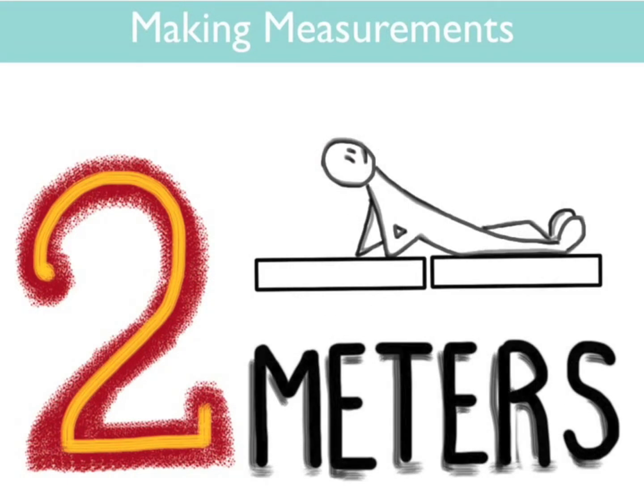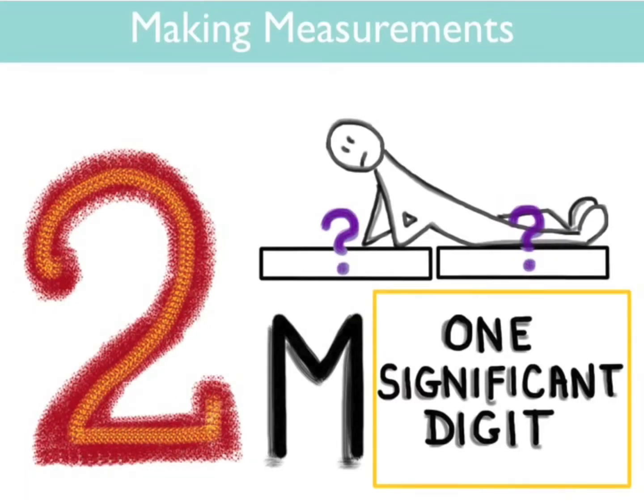Because all measurements have at least some amount of uncertainty in them, people have devised a method which allows you to determine just how exact a measurement is simply by how the number is written. For example, if you write two meters, we say this has one significant digit, which means it's pretty much a total guess. You are saying that a measurement is maybe between one and three meters and you're not very sure about what it is.